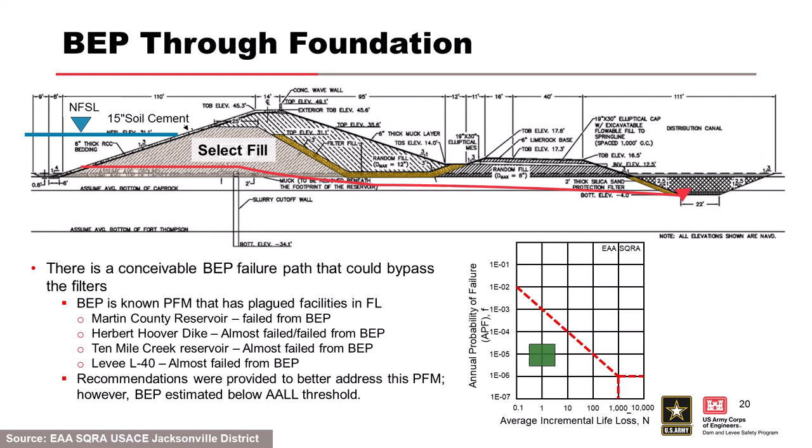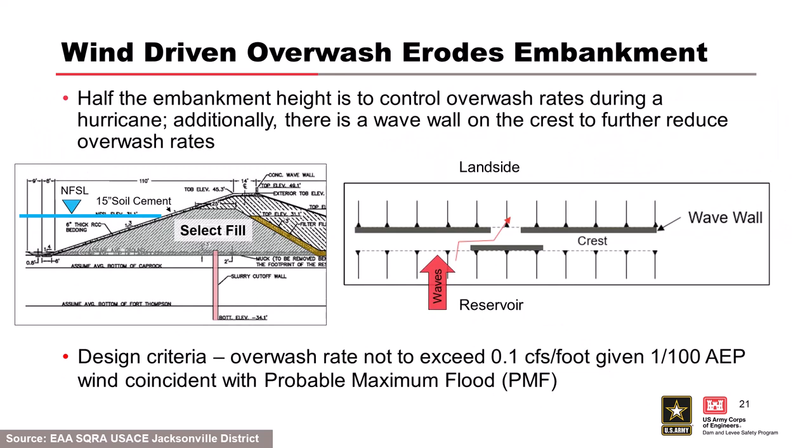Life loss is very low because the reservoir sits in the middle of nowhere. The risk-driving load case is normal full storage level — the maximum pump-in elevation. Backward erosion piping — BIEP — is a known problem that has plagued Florida reservoirs: Martin County Reservoir failed from BIEP; Herbert Hoover Dike almost failed; 10 Mile Creek almost failed; Levee 40 almost failed. Despite the known risk, the best estimate is well below guidelines, and everyone is comfortable with that failure mode using a traditional design standard approach.